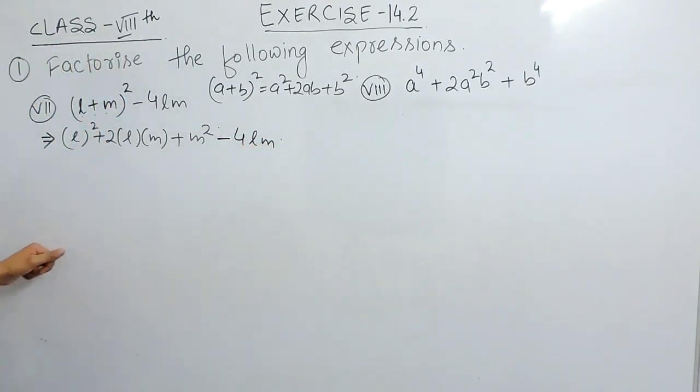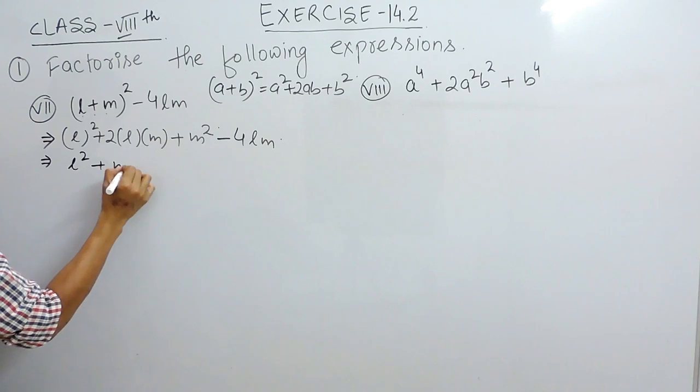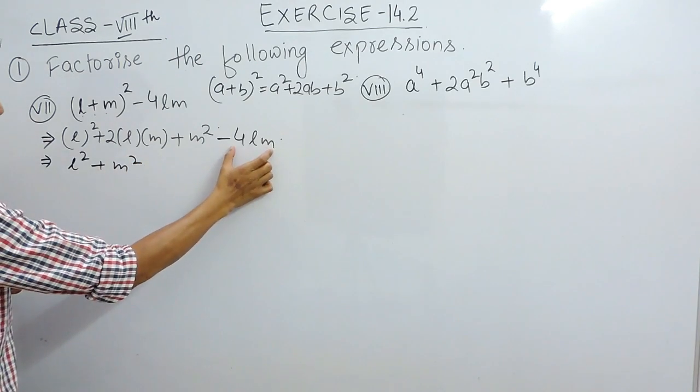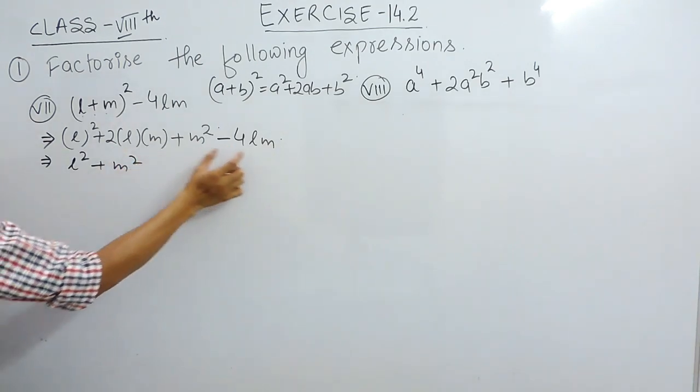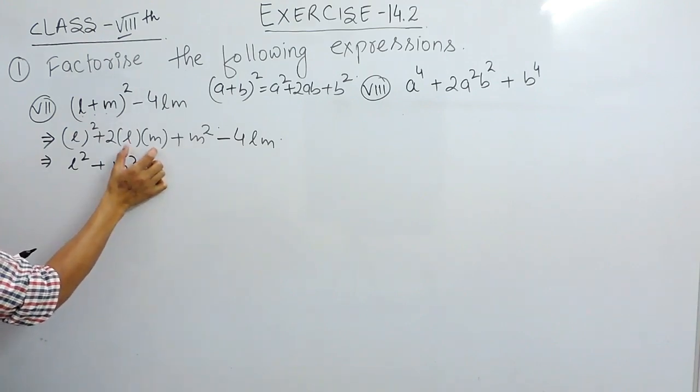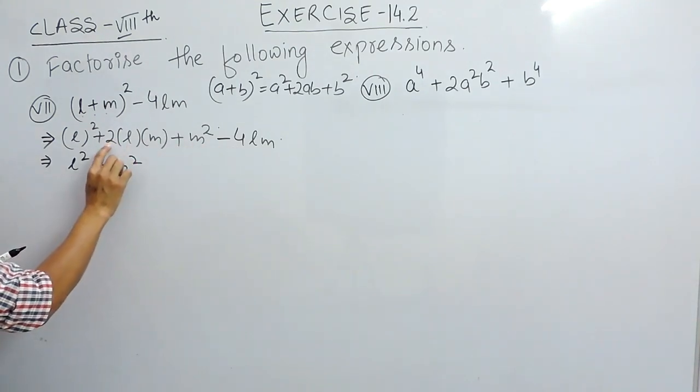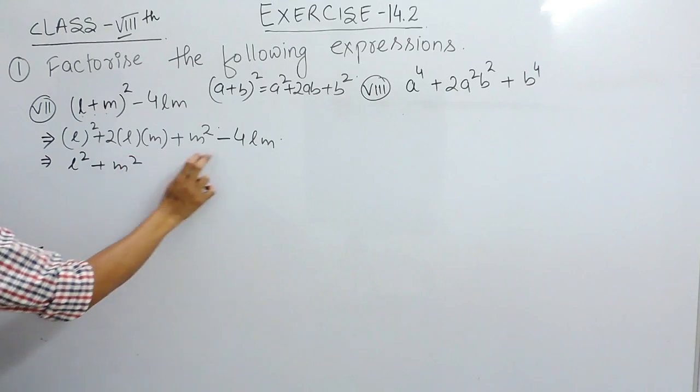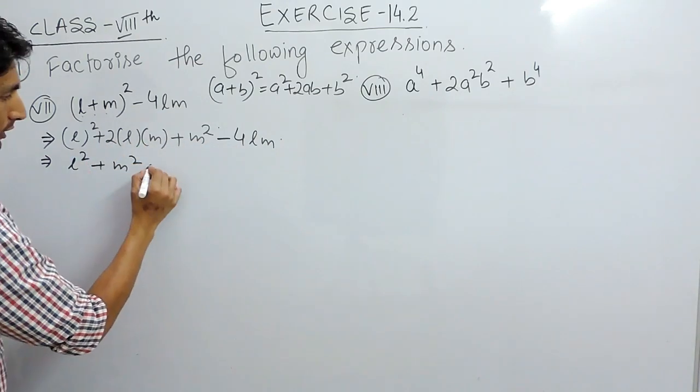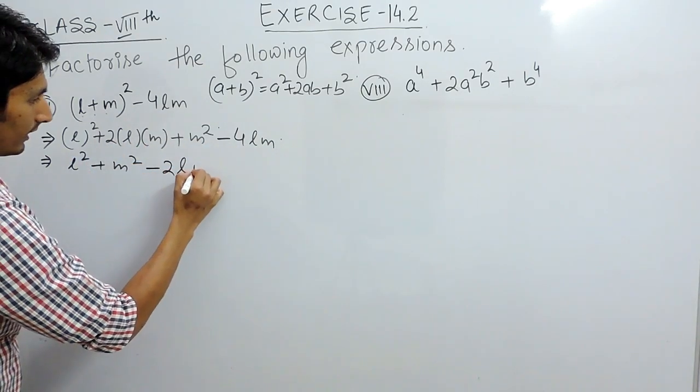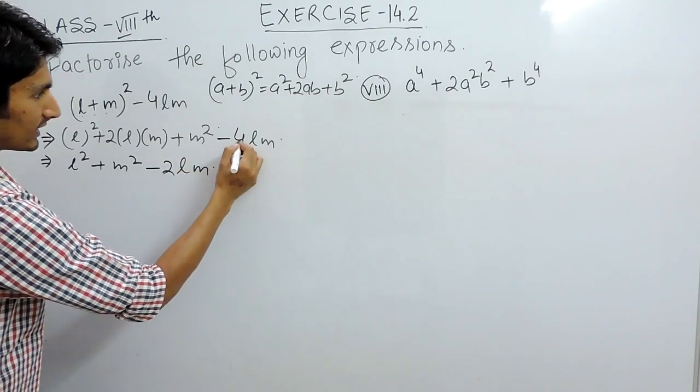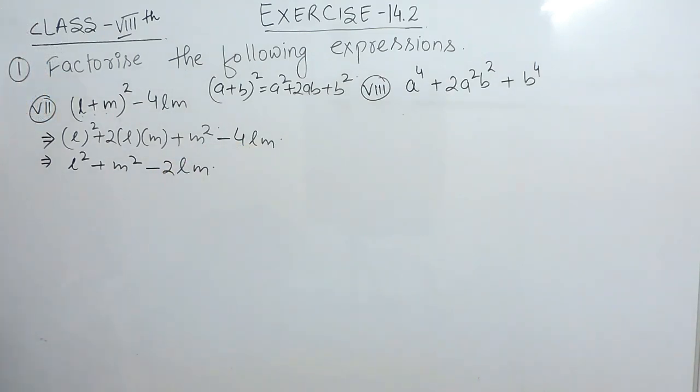This will remain as it is. Now, this is l square, this is m square and because these are like terms, this is lm and again this is lm. And 4, this is 2 and plus minus should be minus. So 4 minus 2 is minus 2lm. Minus sign because greater term has minus sign.